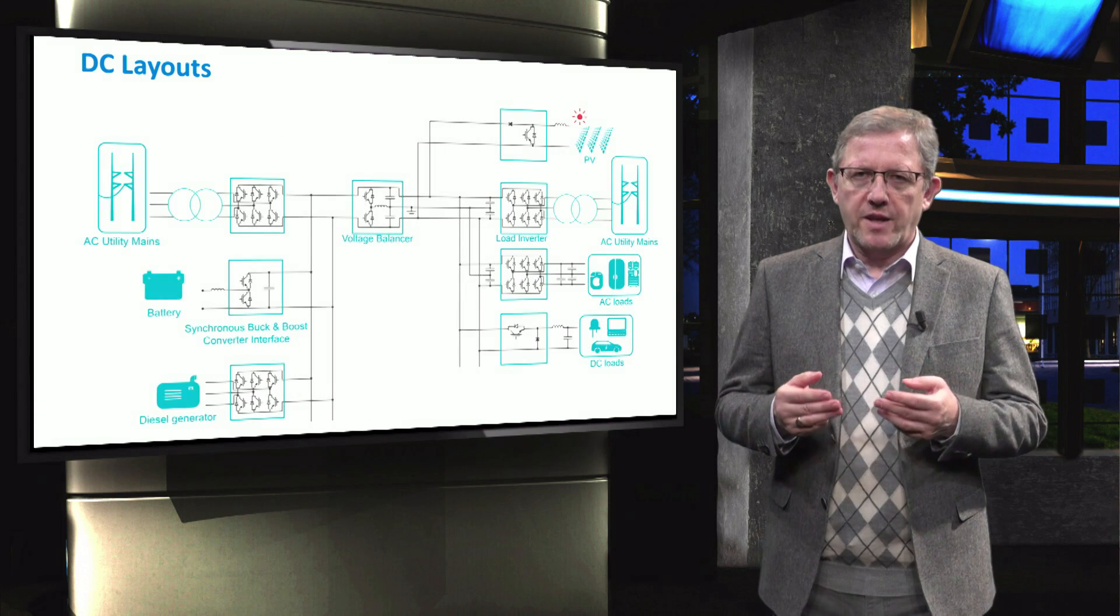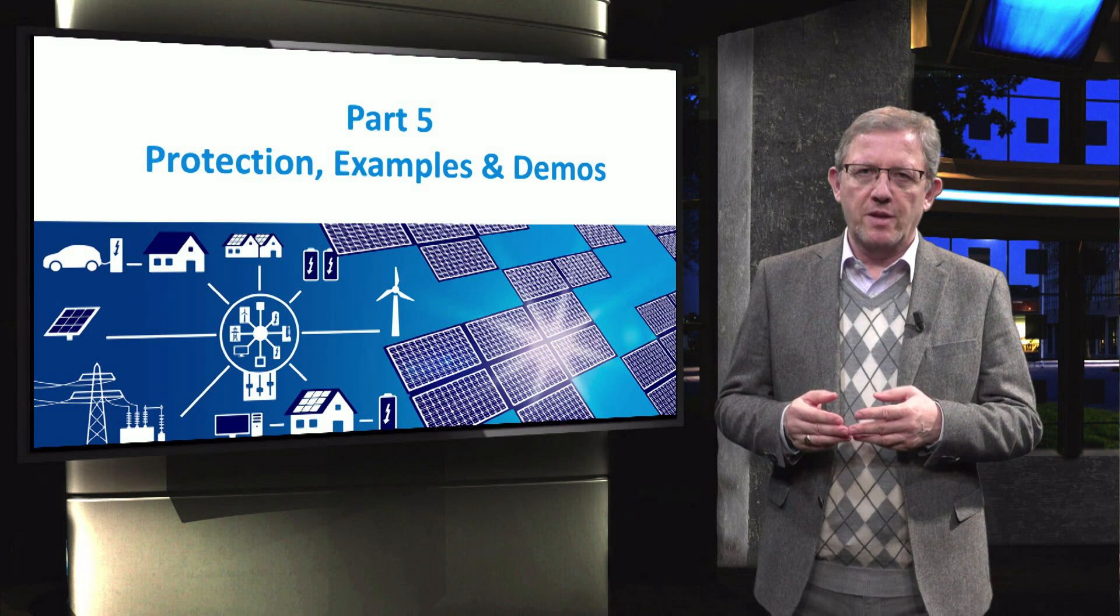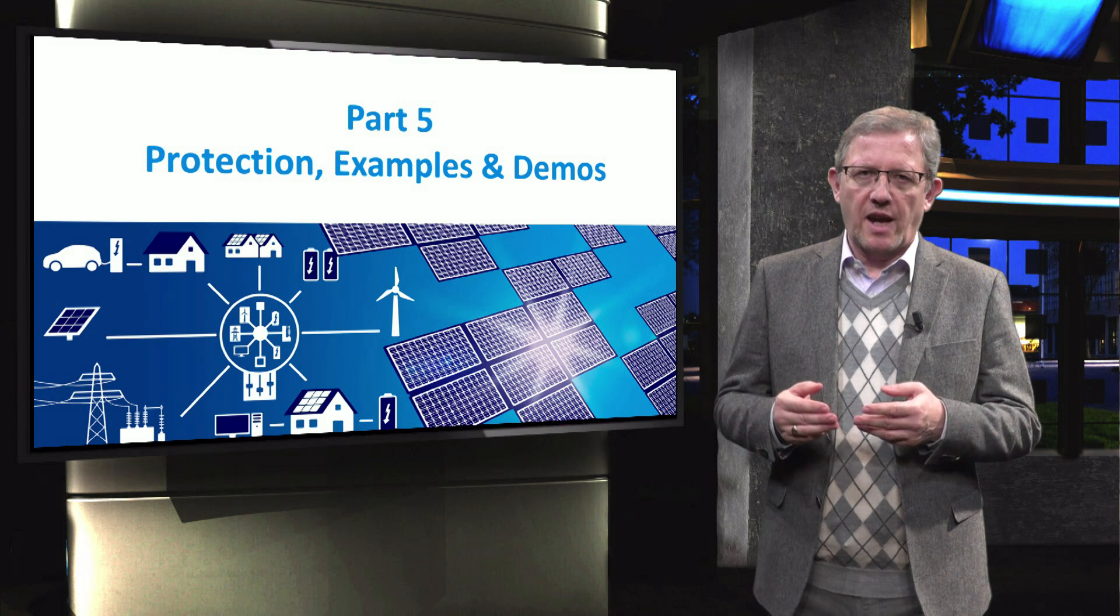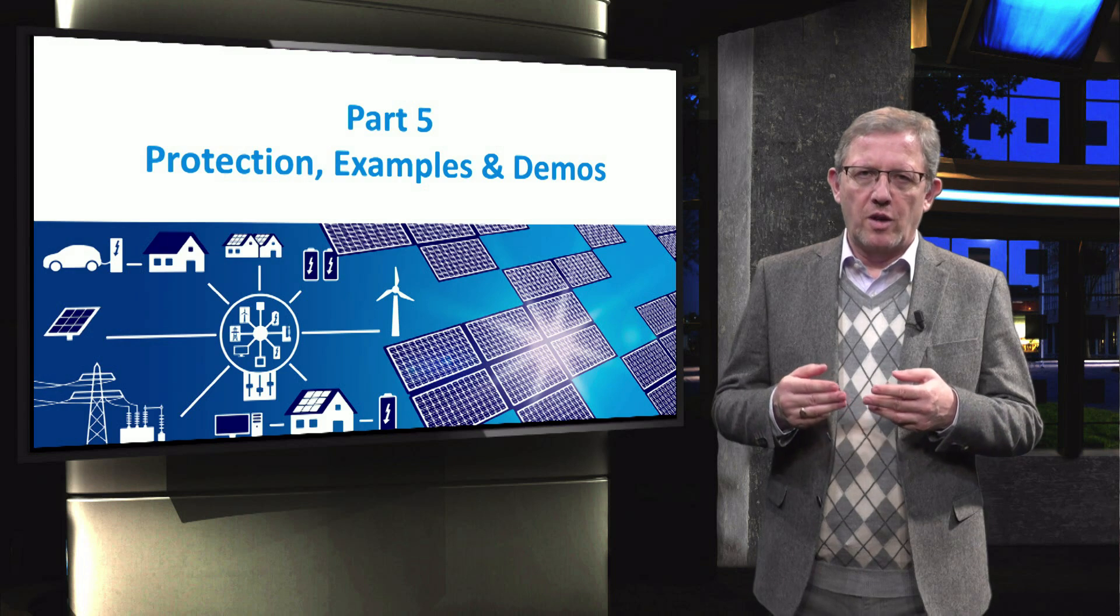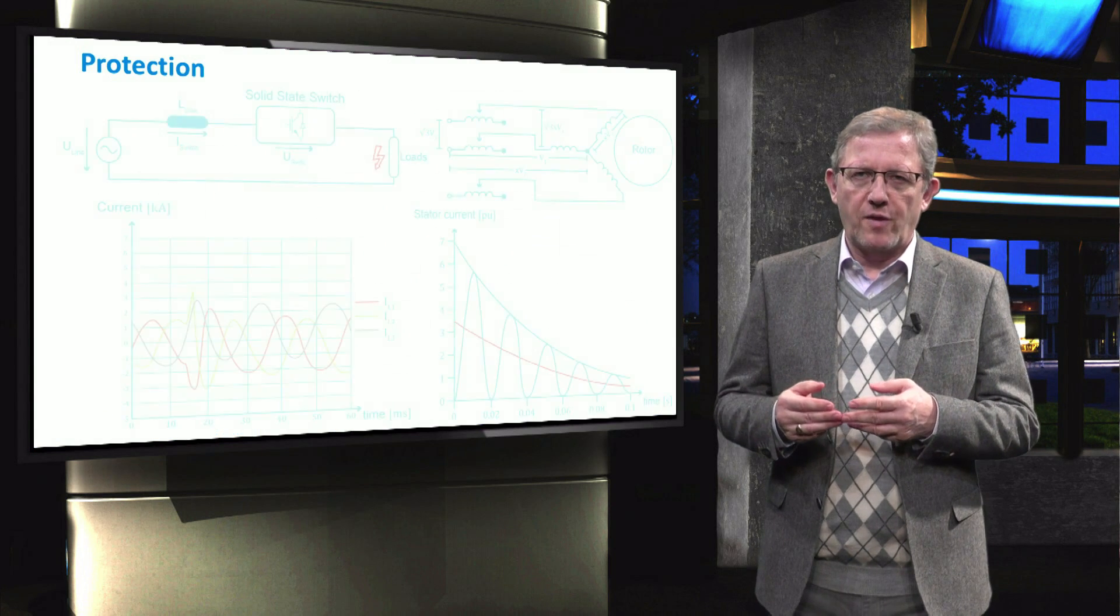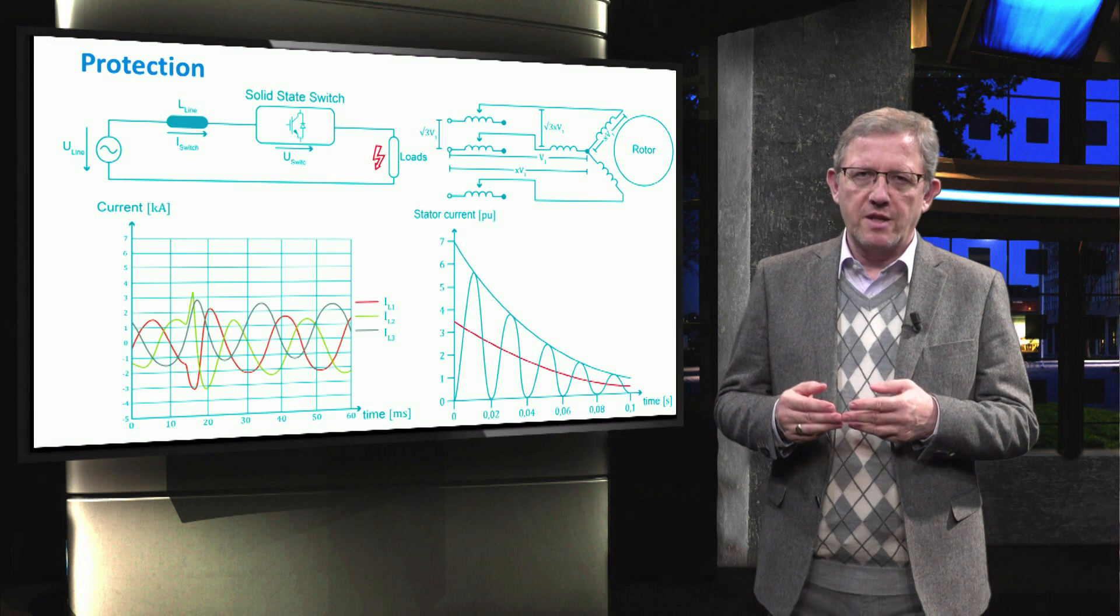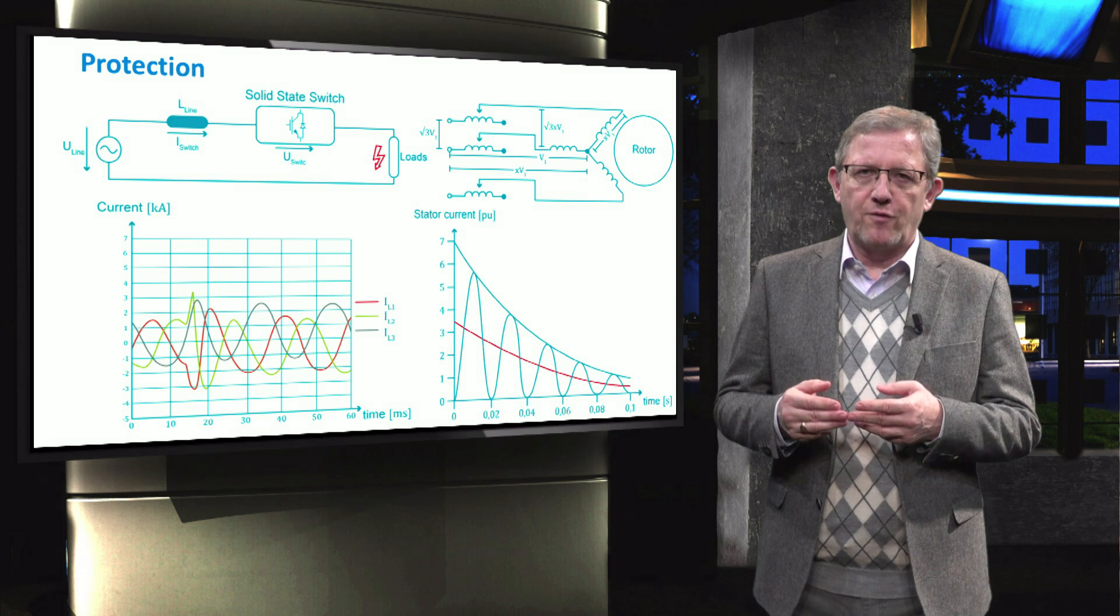In the final section of this course, we will highlight the protection examples and demonstration sites of microgrids. You will learn about the protection in microgrids, including the electronically interfaced distributed generators or the induction electrical machines that typically have very different fault currents.